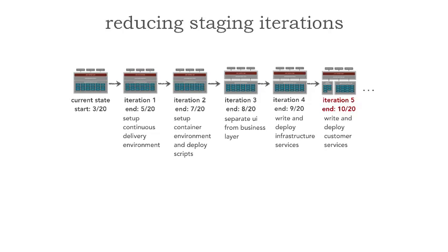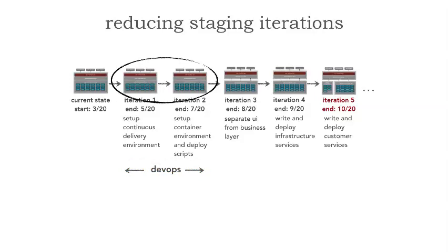There's a problem here. While this looks sound, notice we're starting in March and all the way to October is the very first time we're actually exhibiting any business value. We can identify staging iterations right away because the architecture isn't changing — we're setting up the continuous delivery environment, the container environment, the deployment scripts, the automation. All of this basically refers to DevOps and setting up the whole operational environment.